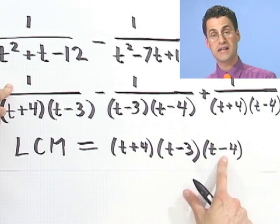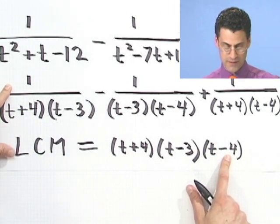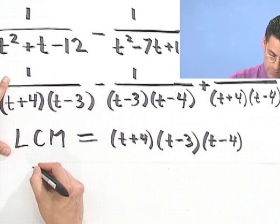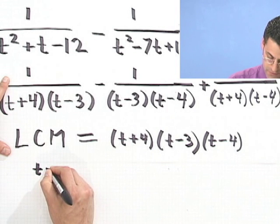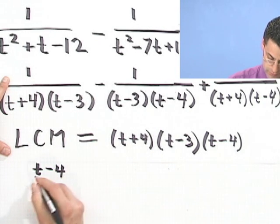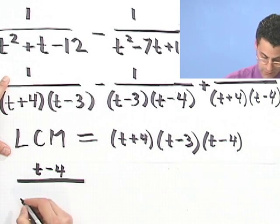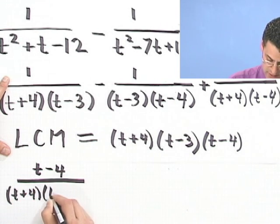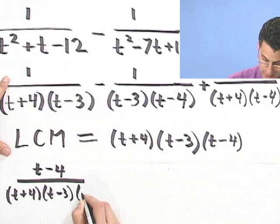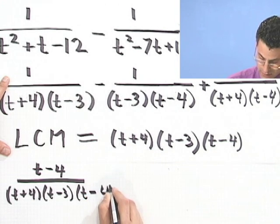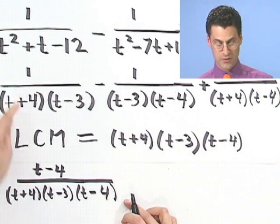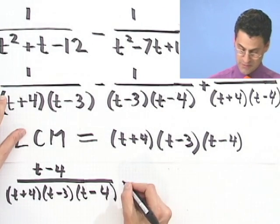What do I have to multiply top and bottom here to get this? Well, I already have that. I already have that. I need this. So top and bottom here is going to be multiplied by t minus 4. And then I'm going to see t plus 4, t minus 3, and t minus 4. So there's that bottom I'm trying to get everyone to have. So multiply top and bottom here by this. Now I'm going to subtract off.